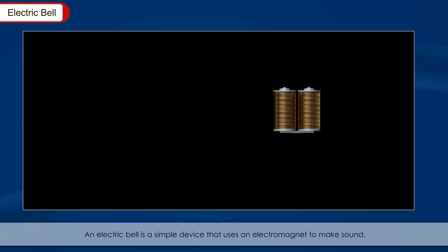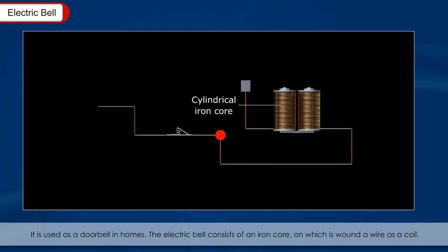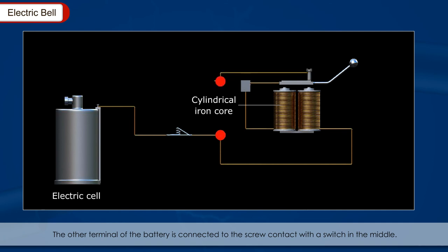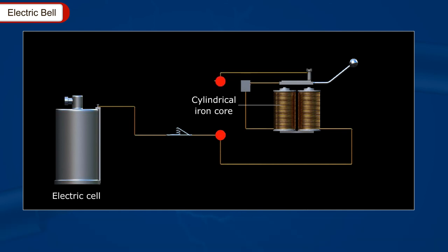Electric Bell: An electric bell is a simple device that uses an electromagnet to make sound. It is used as a doorbell in homes. The electric bell consists of an iron core, on which is wound a wire using a coil. One end of the coil is connected to one terminal of a battery and the other end to a steel rod that acts like a spring for the hammer touching the screw contact. The other terminal of the battery is connected to the screw contact with the switch in the middle.